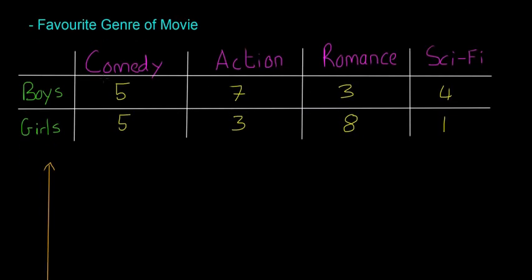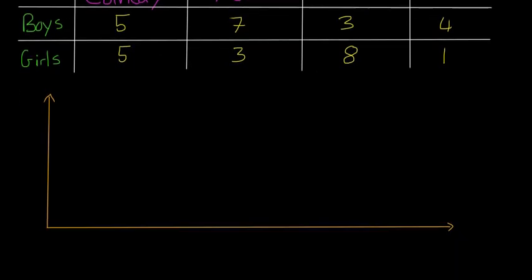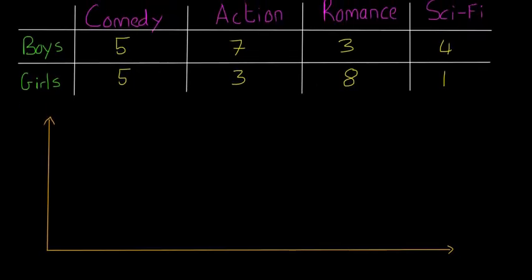Sometimes they might just give you this data and ask you to represent it on some sort of graph without giving you a hint. You should see that with boys and girls, a bar chart is probably the best one to represent this. In this case, I have the axis already drawn out.